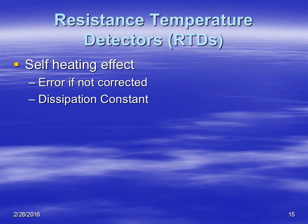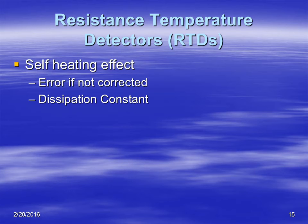Another problem with RTDs is that anytime you're running a current through a wire and there is some resistance, you're actually heating up the wire a little bit — much like a toaster. When you plug in a toaster, you're running current through heating elements. Even a conductor will heat up as you run current through it. So there is some error introduced because of the heating effect of the conductor, but typically that can be corrected using a constant in the calibration.